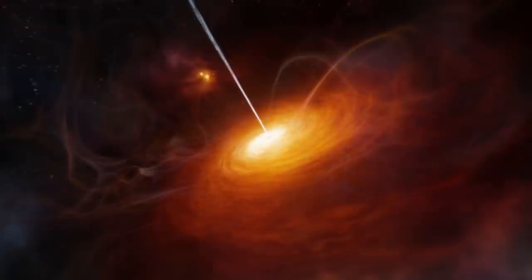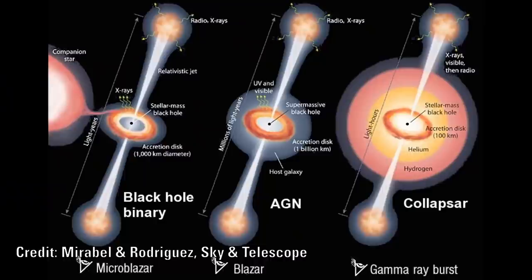But some speculate that the intense magnetic fields twist in around the poles and cause material that is falling in to be ejected along these confined magnetic fields.